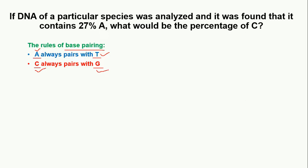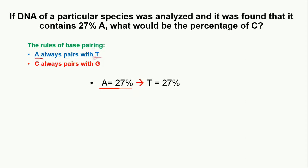Keeping this in mind, we are going to solve this question. We know that adenine is equal to 27%. According to the rule, A equals T, so T is also equal to 27%. If we add adenine and thymine together, we will have 54%.